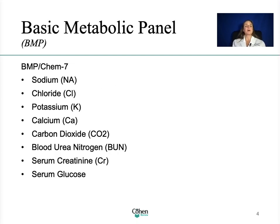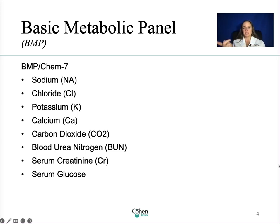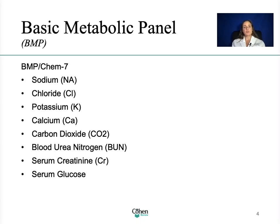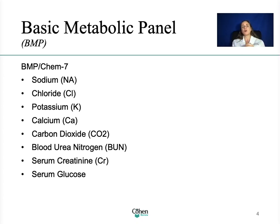Let's talk about the basic metabolic panel, also known as BMP or CHEM7. The basic metabolic panel and the comprehensive metabolic panel are chemical panels where multiple chemical tests are grouped in a single profile for the ease of ordering, since this group of tests is often medically necessary. I want to talk about the basic metabolic panel first because the comprehensive metabolic panel is the basic metabolic panel plus additional tests.